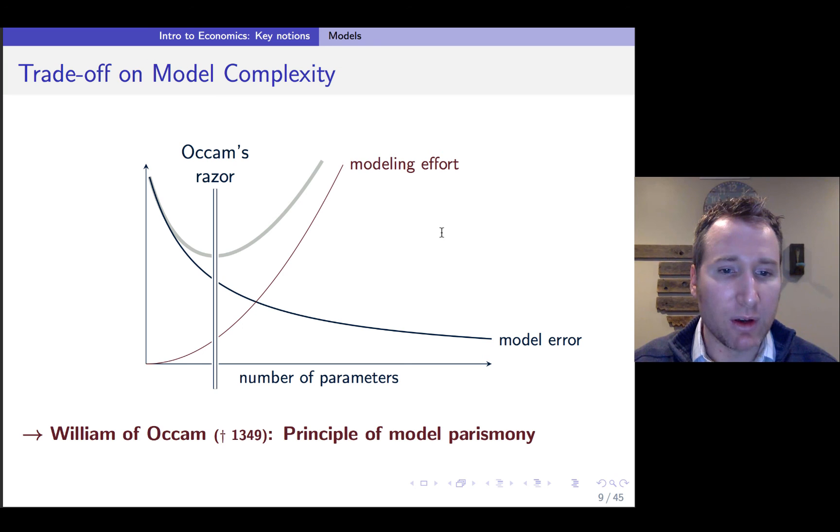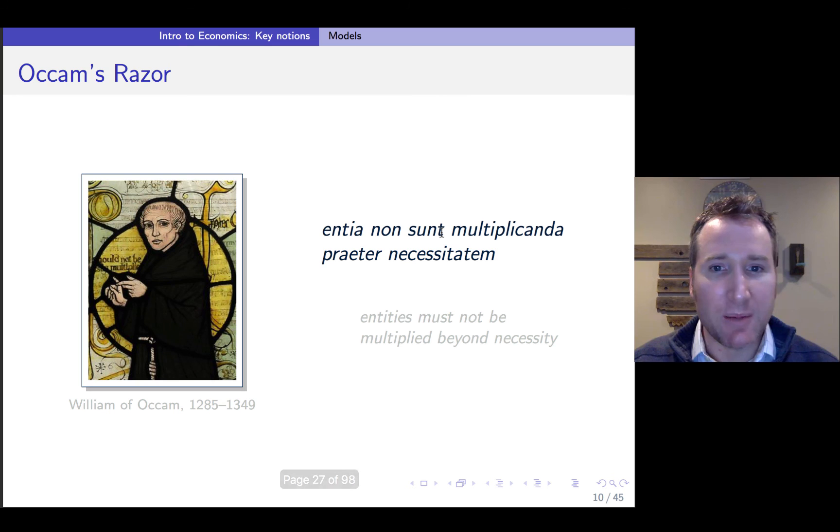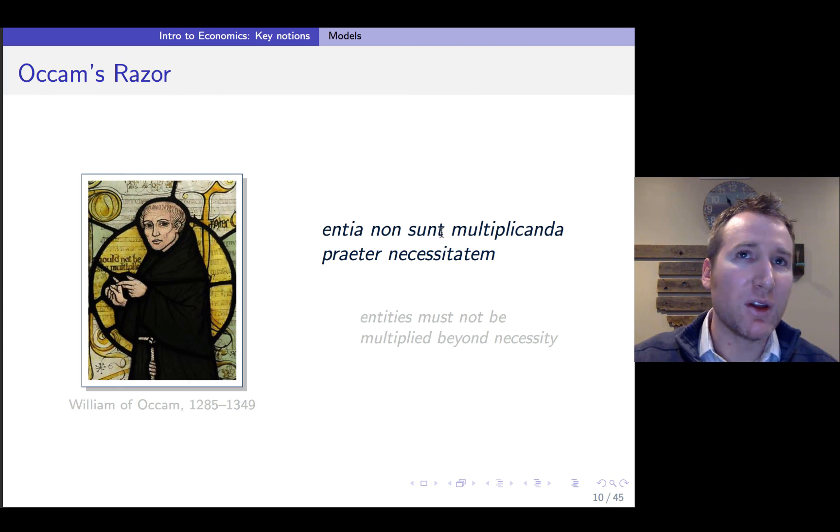And so this often gets simplified to this principle of Occam's razor, which came from a monk in the 14th century. Here's the Latin if you'd like to read it. I'll leave that as an exercise to you. But the English translation roughly is that entities must not be multiplied beyond necessity. And this Occam's razor gets often translated into saying, if you have two answers and one is more simple than the other, you go with the simpler answer. You only accept complexity if it provides value.